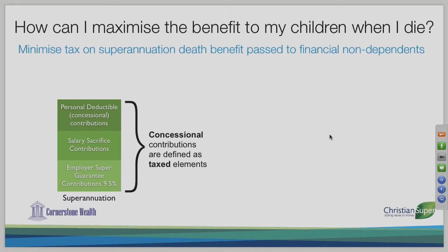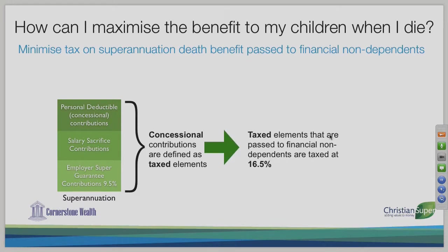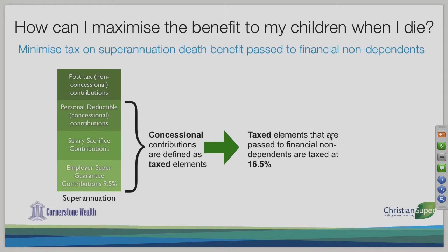These concessional contributions are called taxed elements. When they pass to non-financial dependents — such as adult children — upon your death, those components are taxed at 16.5% before they receive the money.